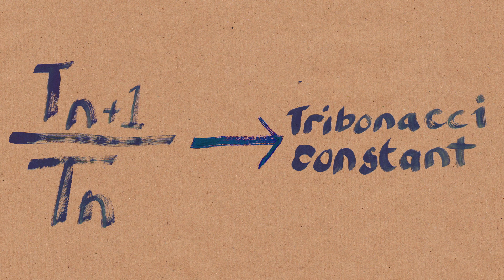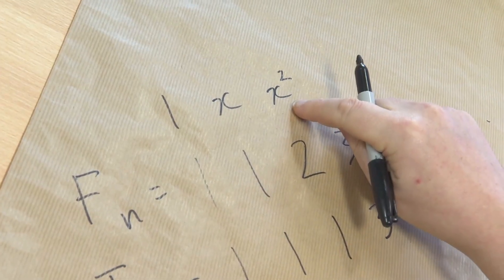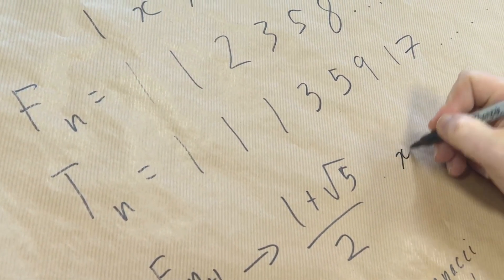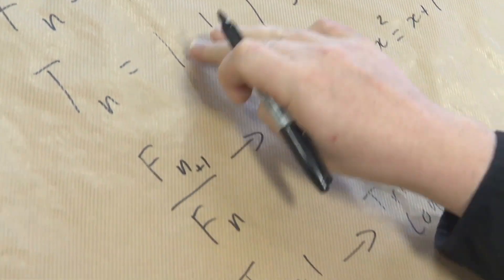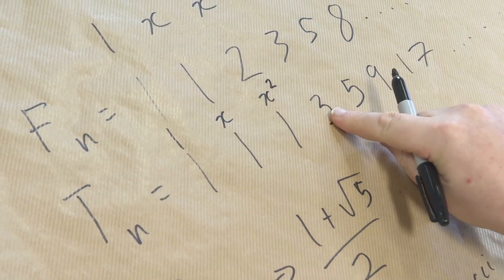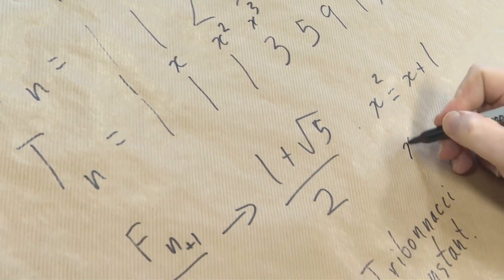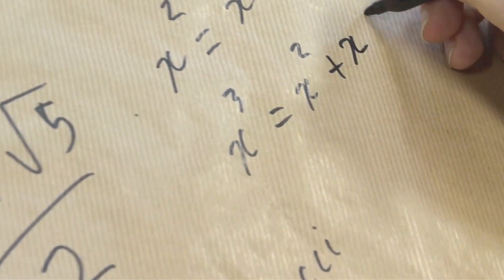With the Fibonacci numbers, one of the ways we can think about how they're going to end up is to say: let's start with 1, x, x squared, where x squared equals the two previous ones together. So x squared equals x plus 1. With Tribonacci, we're adding the three previous terms, so we get 1, x, x squared, and this term is going to be x cubed. So x cubed equals x squared plus x plus 1.